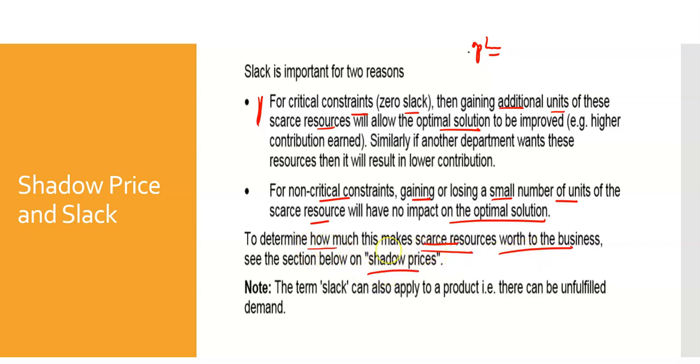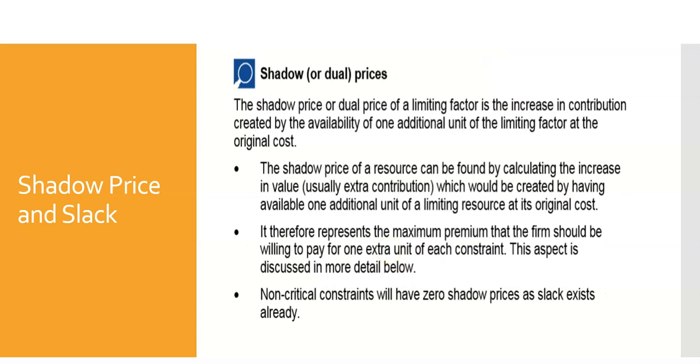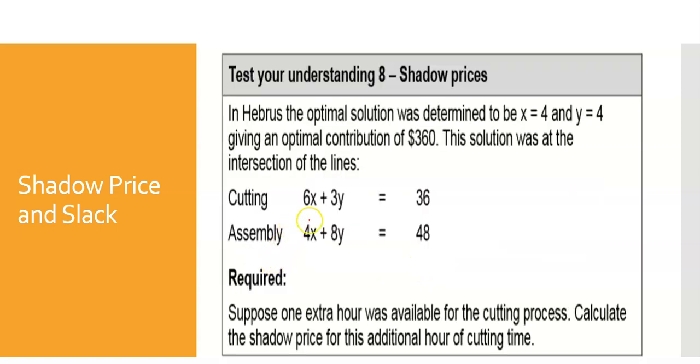Let's talk about the scarce resources. To determine how much this scarce resource is worth to the business, let's talk about shadow pricing. I mentioned earlier we're looking at the extra contribution - what is the increase in value by having an extra unit, an additional one unit of a limiting resource. You have an interesting example where the optimal solution was to make 4 x's and 4 y's, and they gave you this optimal contribution of $360 currently.